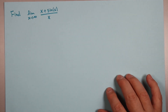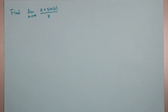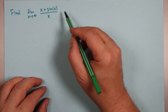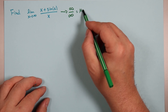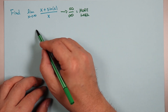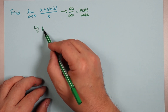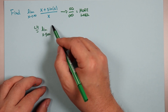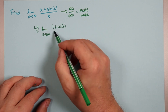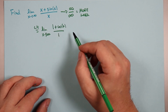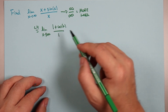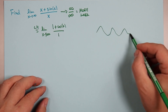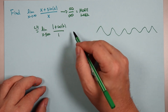Classic problem: find the limit as x goes to infinity of (x + sine x) over x. We get infinity over infinity — more work — so we apply L'Hôpital. This becomes the limit as x goes to infinity of the derivative of the top, 1 plus cosine x, over the derivative of the bottom, 1. What's happening? 1 plus cosine x is going up and down — that's no limit; it doesn't converge. So L'Hôpital doesn't apply here.